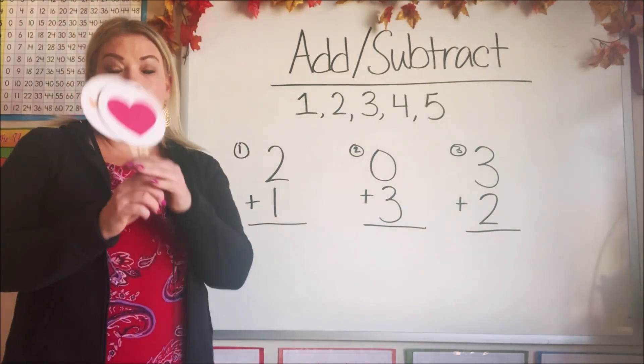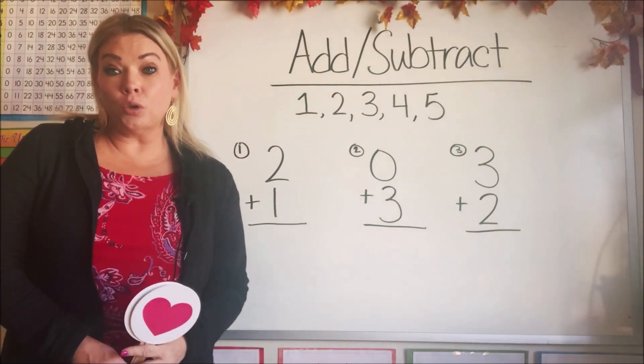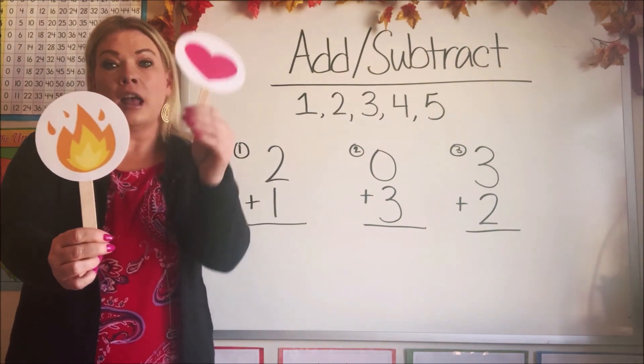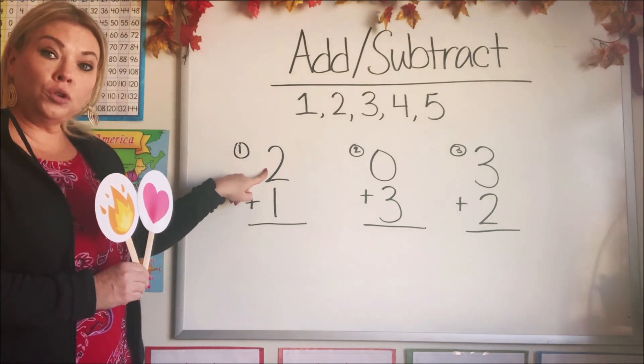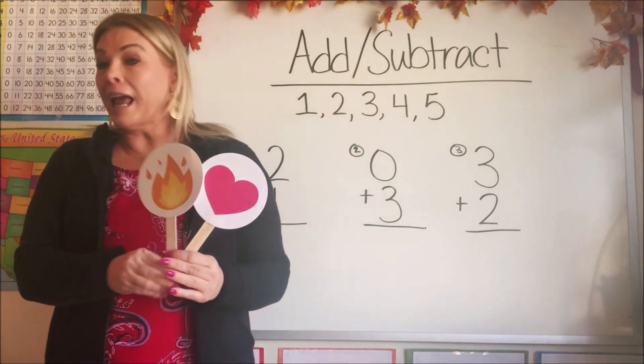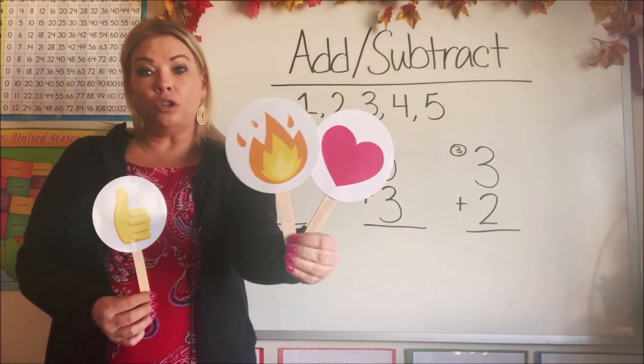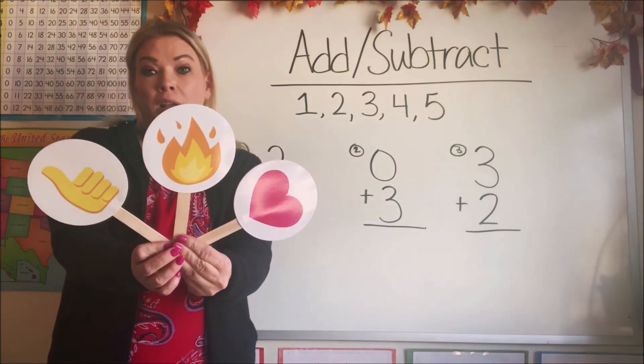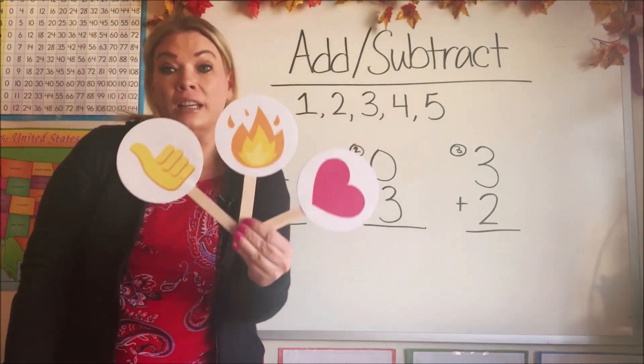So for the first one, I found these little signs I have. Now the first number it shows us is two. So I found two signs. One is a little fire and one's a heart. So I have two signs. Now it says two add one. So we have two and we need to add one to it. How about a thumbs up? Here's our two and we're going to add this one to it. Now how many do we have? We have one, two, three. We have three.